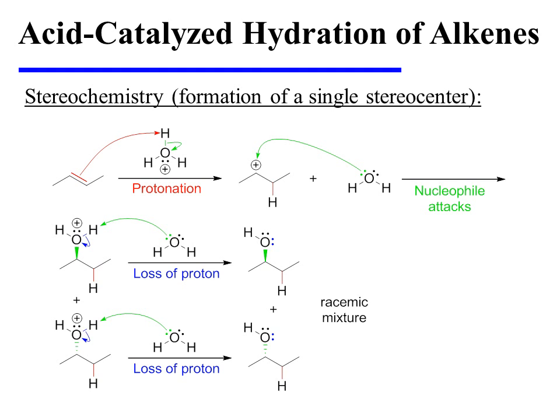Notice that the addition of a proton does not generate a stereocenter. However, when water attacks the carbocation intermediate, a stereocenter is formed. And since the carbocation is trigonal planar, or flat, water may attack it from above or from below to yield two enantiomeric oxonium ions, each of which will shed a proton to the medium so as to form a racemic mixture of alcohol products.